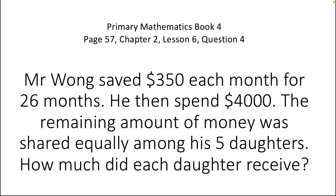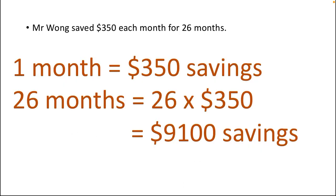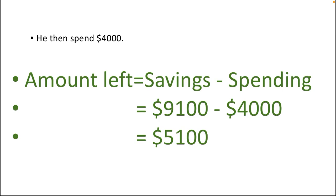After reading the question, we have to analyze its statements one by one. The first statement is: Mr. Won saves 350 dollars each month for 26 months. One month savings equals 350 dollars, and we need to find 26 months savings. The trick is we are moving from one month to 26 months — from fewer months to more months — so we need to do multiplication: 26 times 350 dollars, which gives us 9,100 dollars in savings.